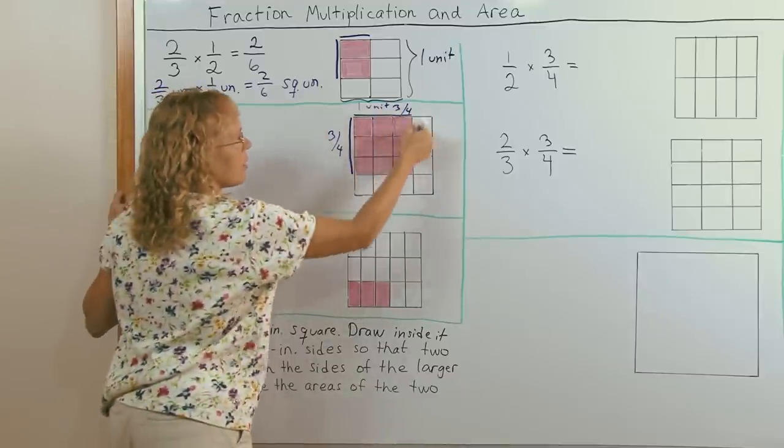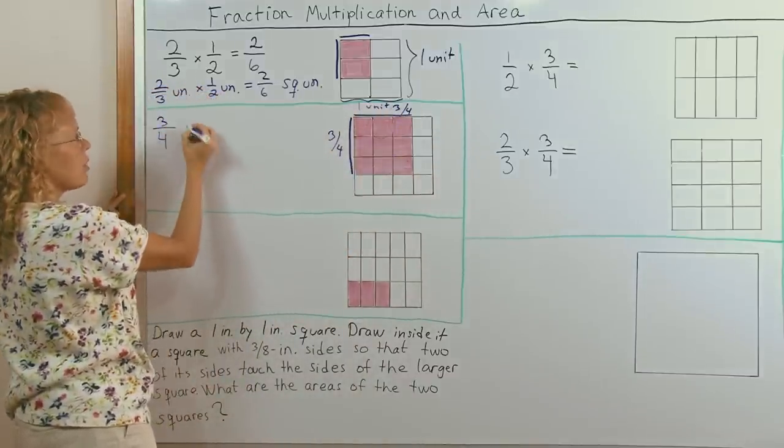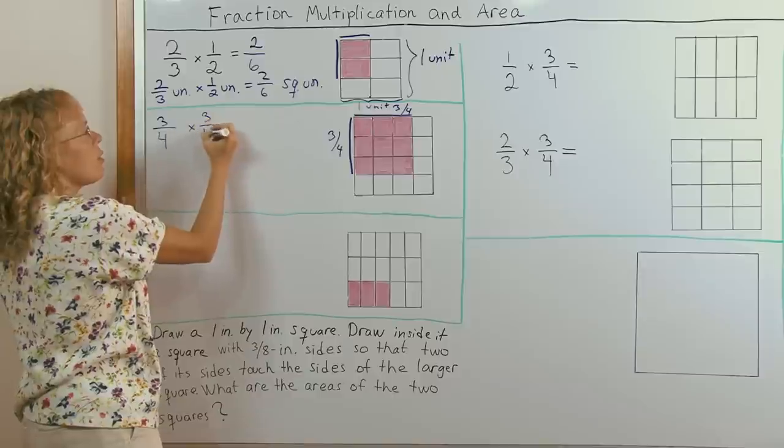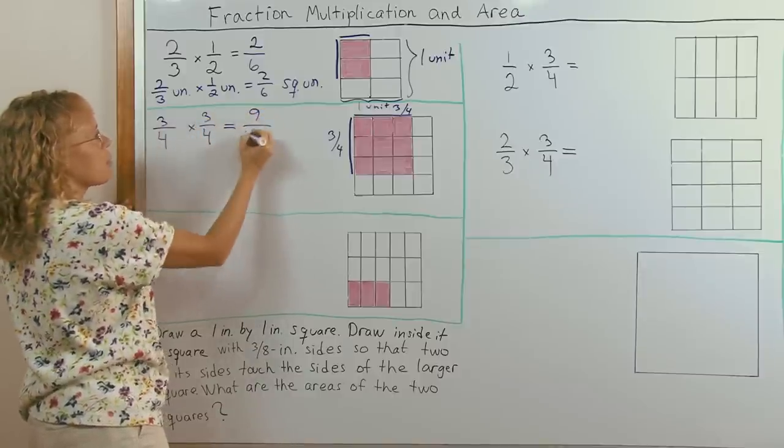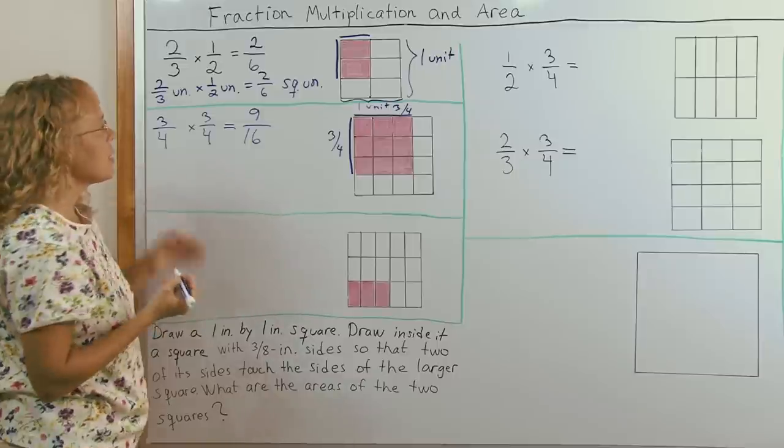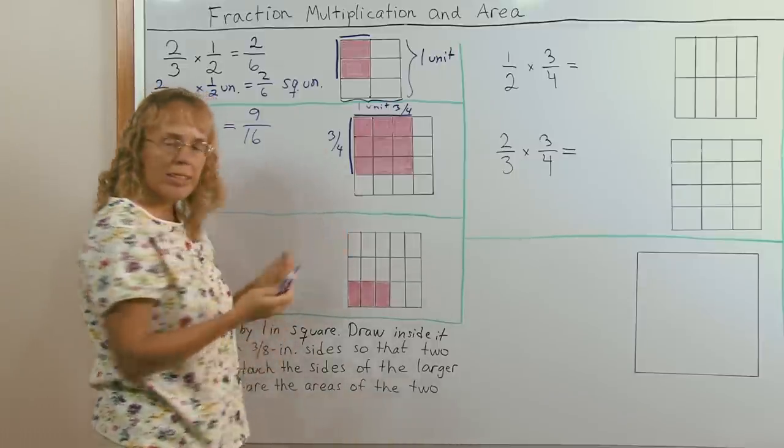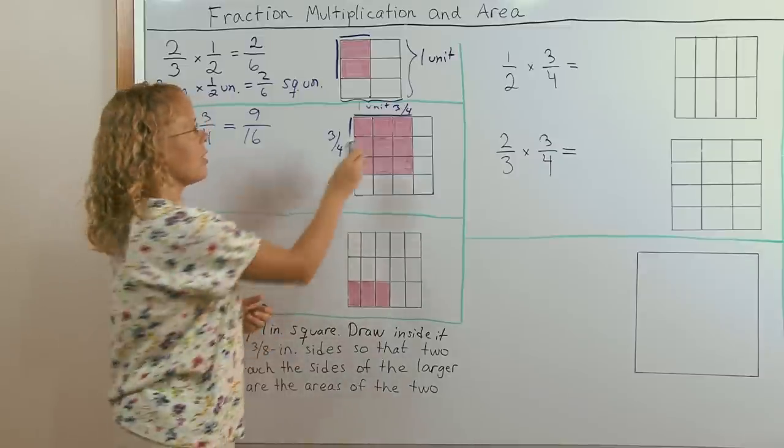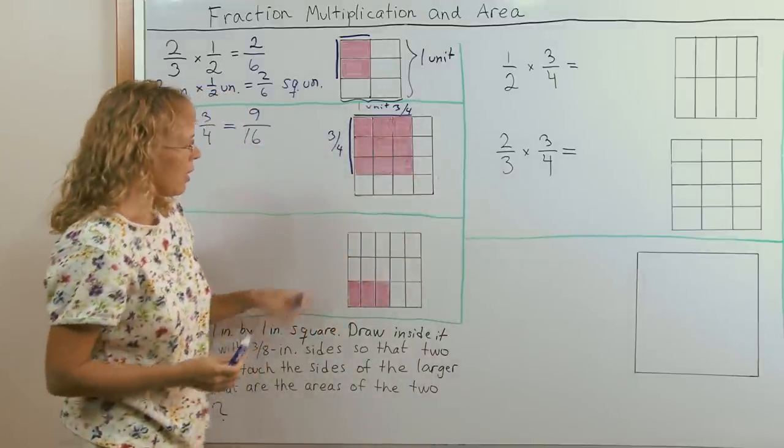So to get the area of this colored rectangle, I multiply the three fourths of a unit times three fourths of a unit. And I get three times three is nine, four times four is sixteen. Nine over sixteen here. Nine are colored out of total sixteen.